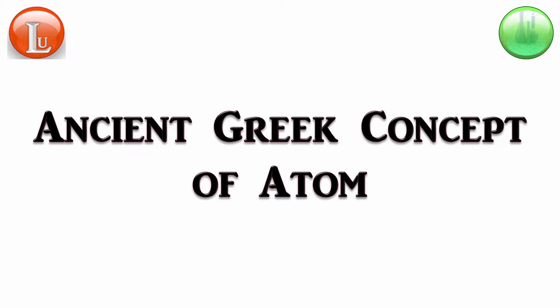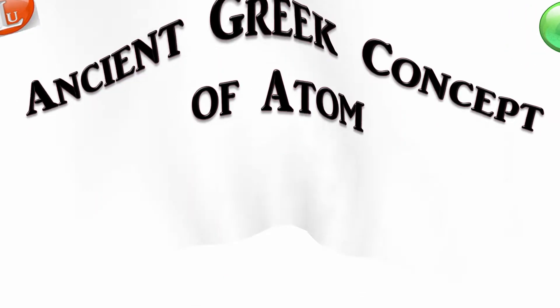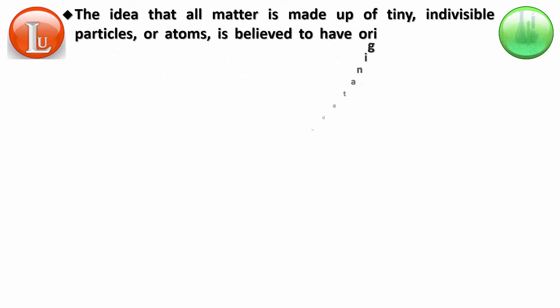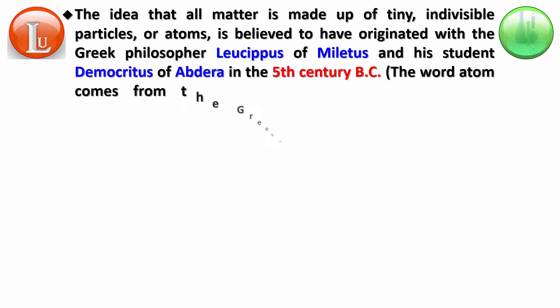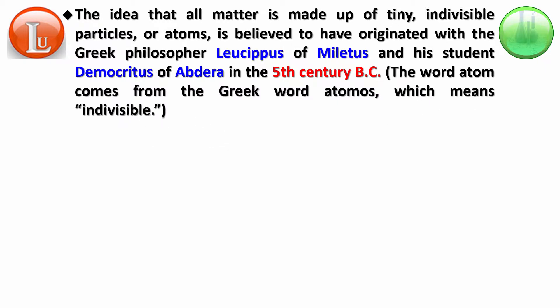The idea that all matter is made up of tiny indivisible particles, or atoms, is believed to have originated with the Greek philosopher Leucippus of Miletus and his student Democritus of Abdera in the 5th century BC. So the first theory came in the 5th century BC where they talked about the concept of atoms. The word 'atoms' today comes from the Greek word 'atomos', which means indivisible. Their idea was that you cannot break matter further down — it is the smallest piece of matter.